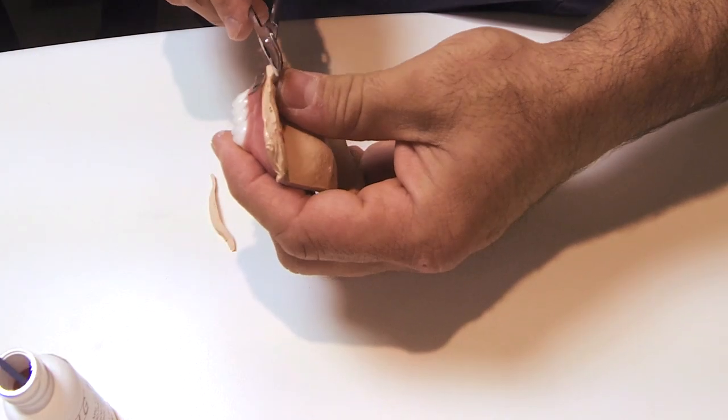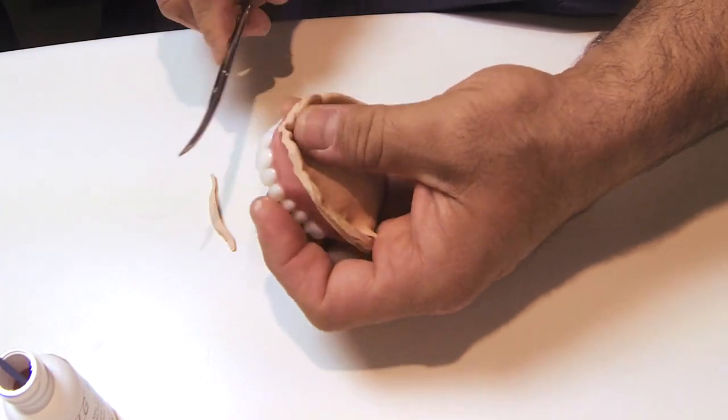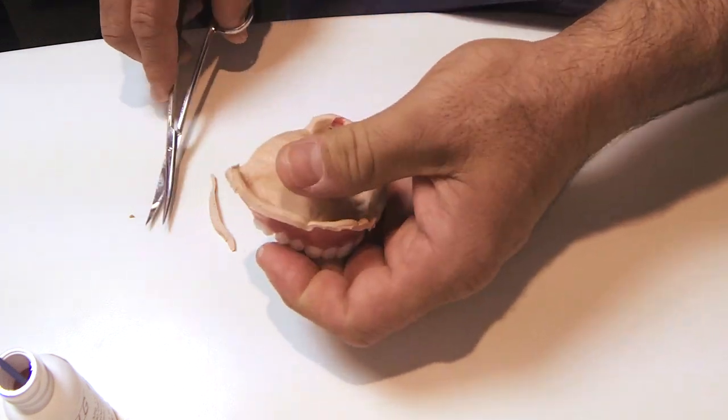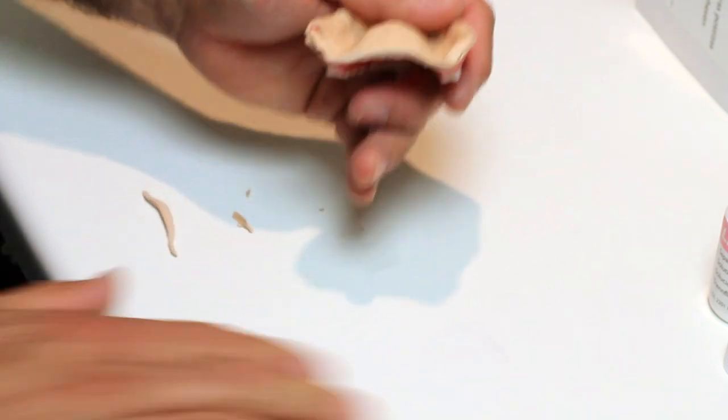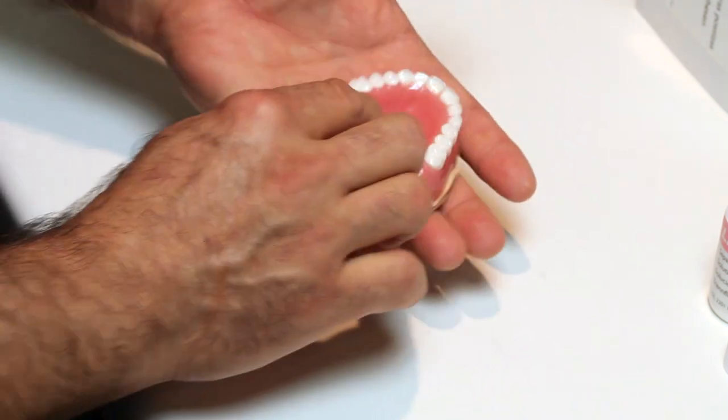For the entire process about to be explained, everything that touches the denture, teeth, or impression material needs to be stoned. Everything that touches the jig should be plaster.